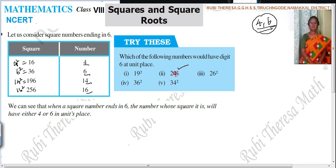So, 24 square because in unit place you are having 4. 26 square because in unit place you are having 6. 36 square because in unit place you are having 6. 34 square, you are having 4 in the unit place. Then the square number ends in 6.